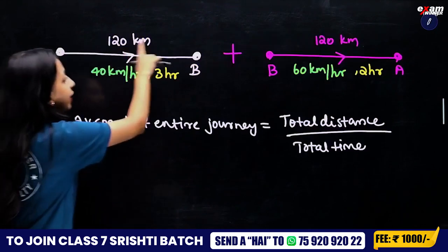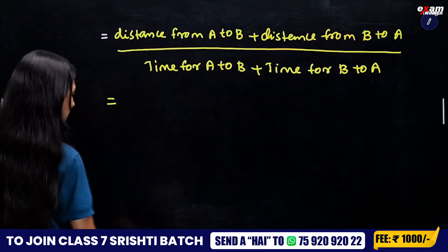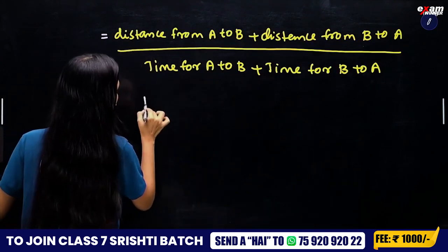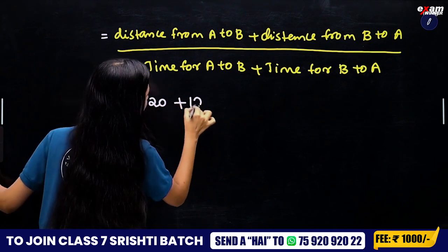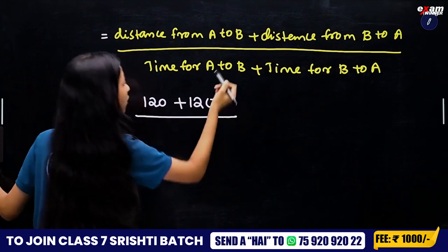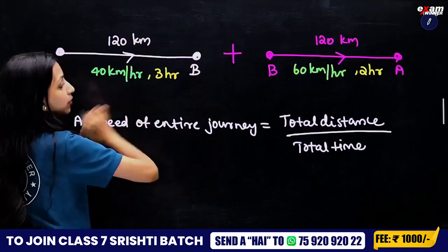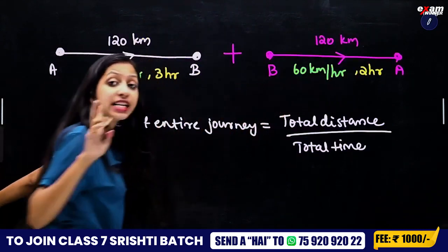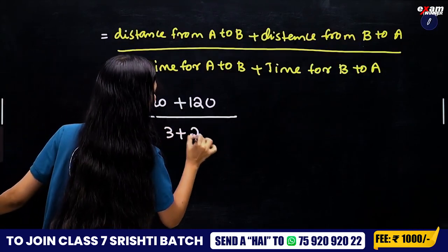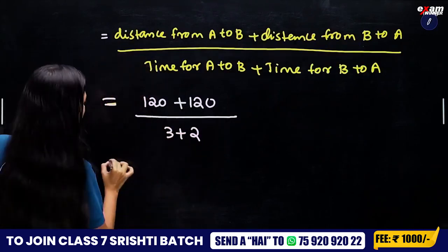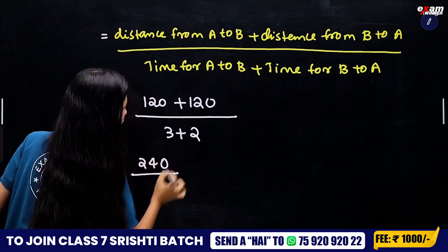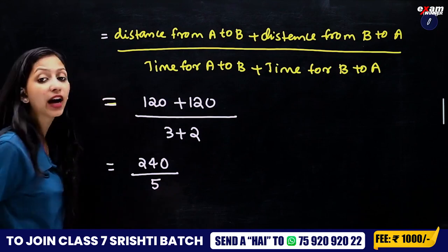Total distance is 120 plus 120, which equals 240. Total time is 3 hours plus 2 hours, which equals 5. So average speed is 240 divided by 5, which equals 48 km per hour.